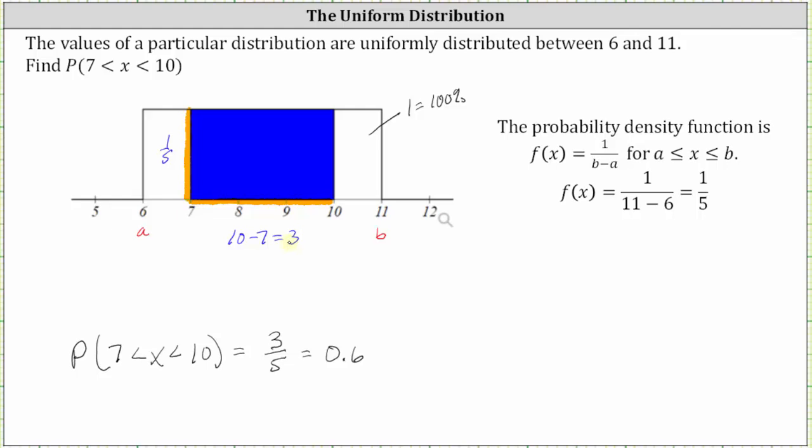So the area of the blue rectangle is equal to the base times the height, which is three times one fifth, which of course also gives us three fifths, or as a decimal, 0.6, which is the desired probability. I hope you found this helpful.